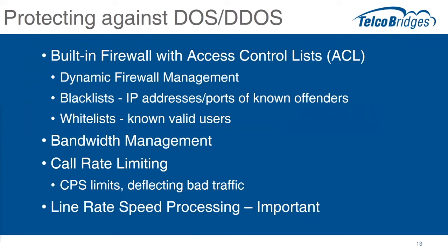By looking at the SIP session, the SBC knows to open the UDP ports for a particular session. On top of that, it has the smarts to say: we negotiated a G.711 session, so I should be getting 64 kilobits per second on this UDP port. If all of a sudden I'm seeing 128 kilobits per second or more, something's wrong — and then of course shutting it down because it's clearly fraudulent.